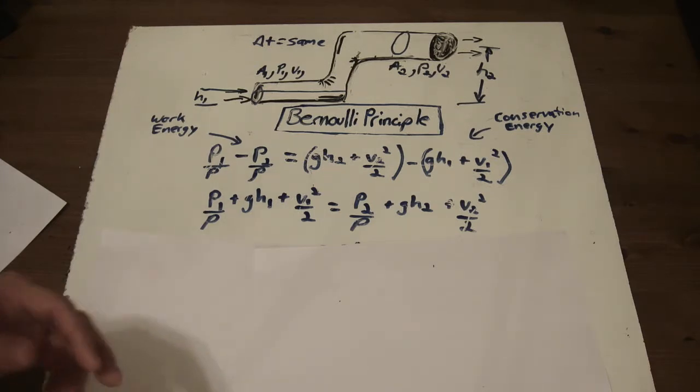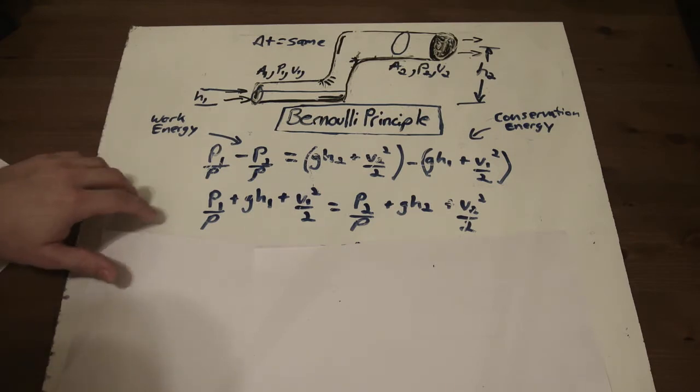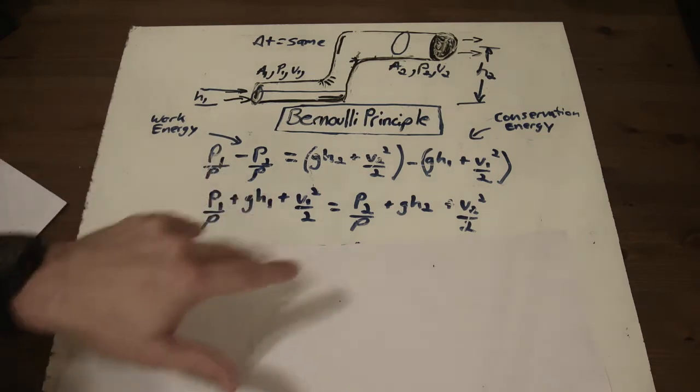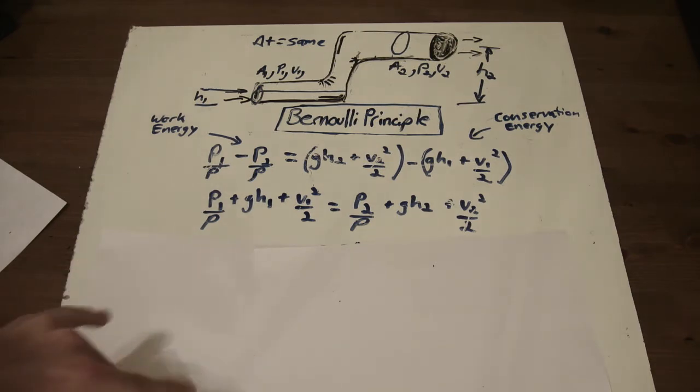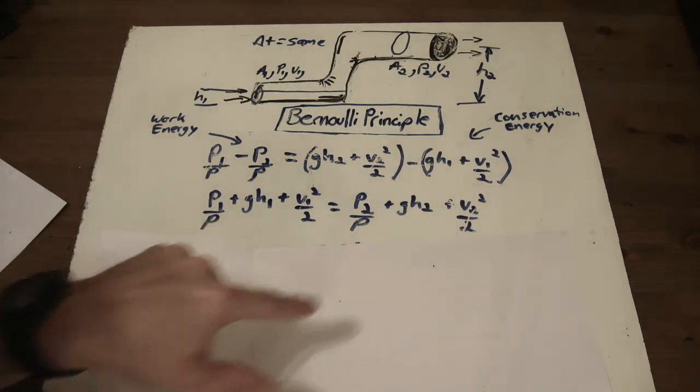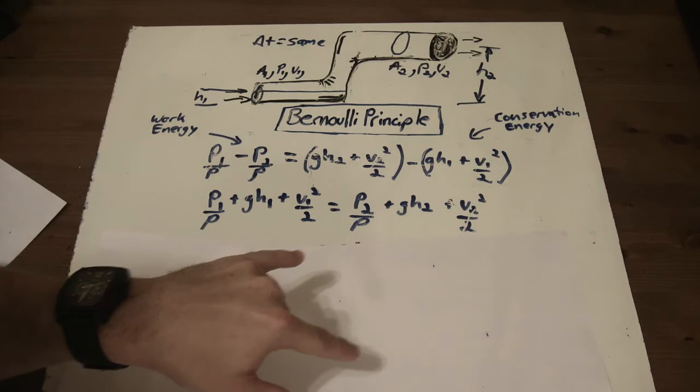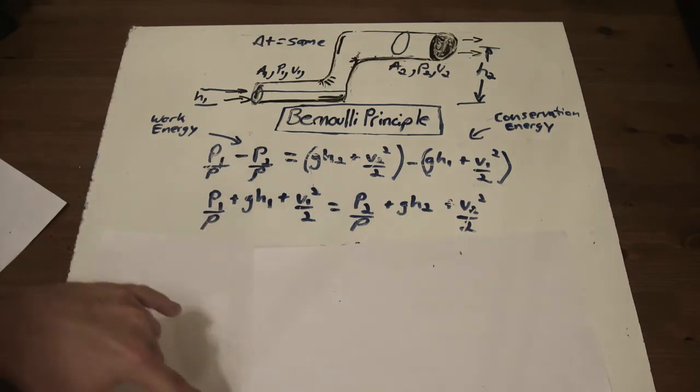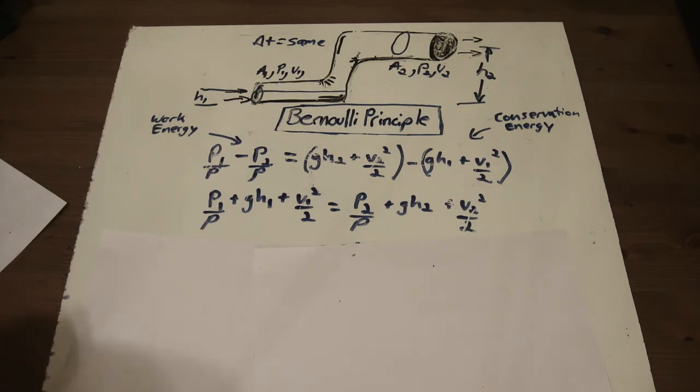And now what we start to realize is there's a relationship between pressure, the GH, and this velocity of the fluid. And because these are equal to each other now, we can say that for any combination of pressure, GH, and the velocity, there's going to be some constant that that equation is equal to.